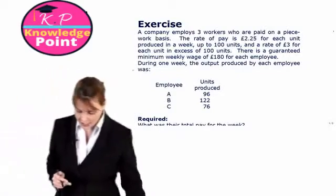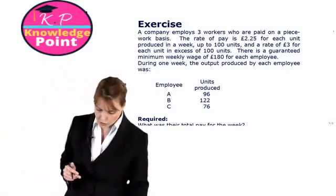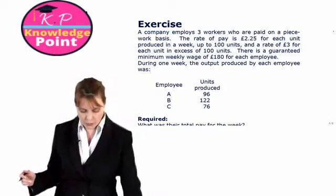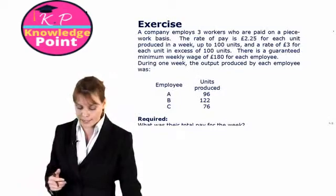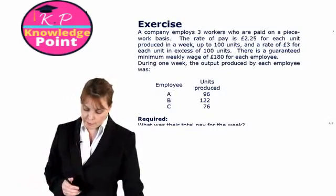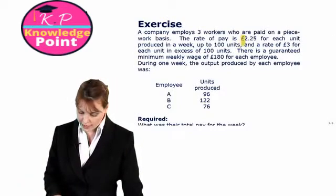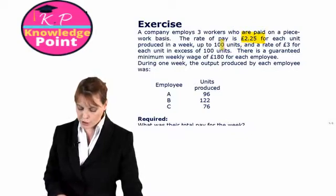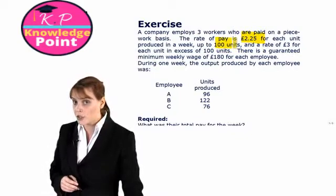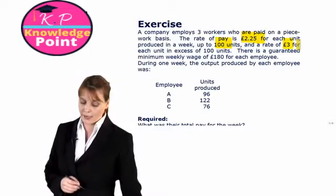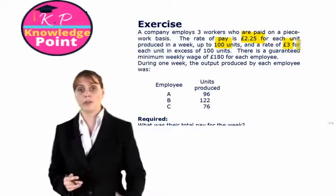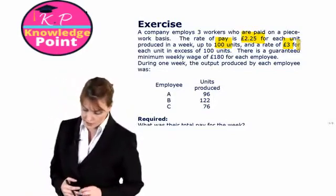Beginning with our first exercise, we are told a company employs three workers who are paid on a piecework or piece rate basis. The rate of pay is £2.25 for each unit produced up to 100 units. After that, they will get £3 per unit. So this is a differential piece rate basis.